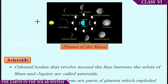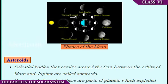The Moon has no water or air. The climate is not suitable for living. There are lots of hills and craters on the surface of the Moon.